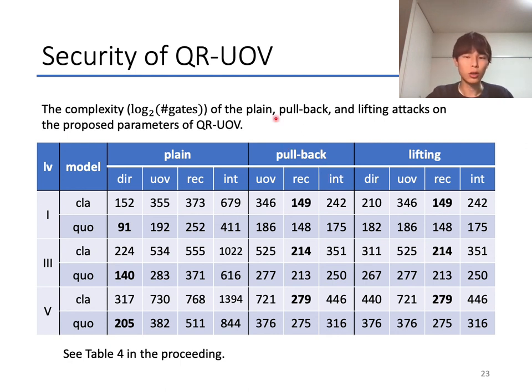About the security of QR-UOV, we confirmed that the proposed parameters satisfy the requirements for each security level, like this. In this table, we consider the complexity of existing attacks and some attacks utilizing the quotient ring structure of QR-UOV, such as the pullback and lifting attacks.